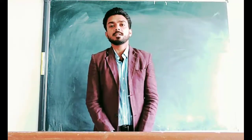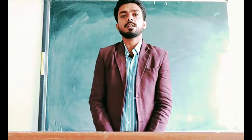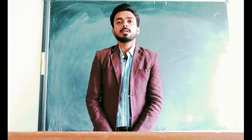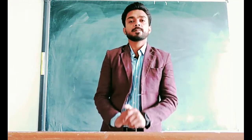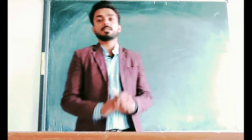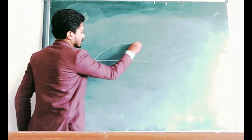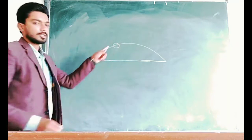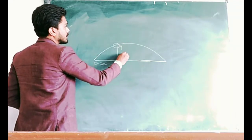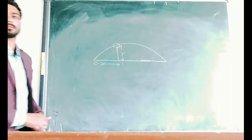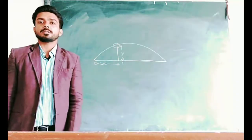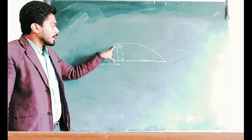Hello everyone. Today in this class we are going to discuss our new topic from the chapter Motion in Two Dimensions, and that is Uniform Circular Motion. As we have discussed in projectile motion, that is the type of motion in a plane, because to describe the projectile motion the position of any body requires both x-axis and y-axis. That is why we call this motion in two dimensions.